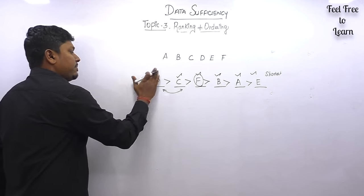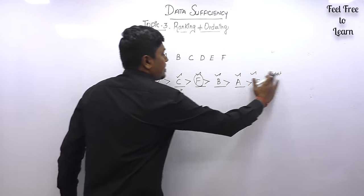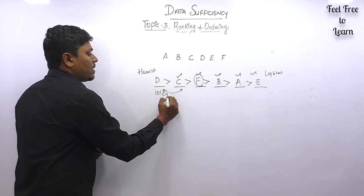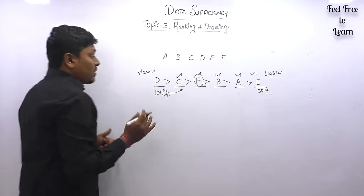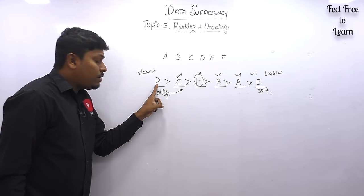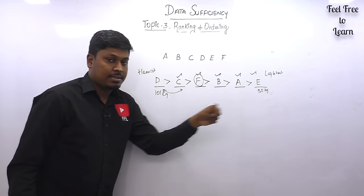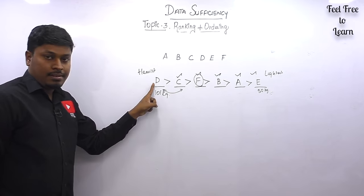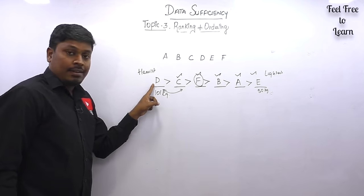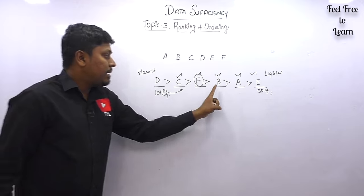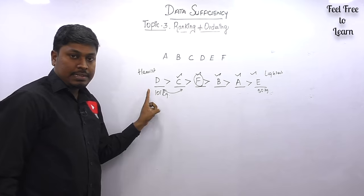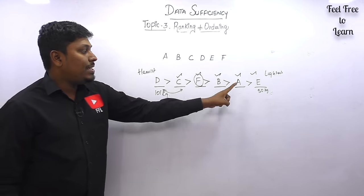The same concept applies for heaviest and lightest. For example, D is the heaviest person and E is the lightest person. So C is lighter than one person and heavier than four persons. F is lighter than two persons and heavier than three persons. B is lighter than three persons and heavier than two persons. A is lighter than four persons and heavier than one person. E is the lightest person.